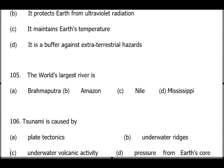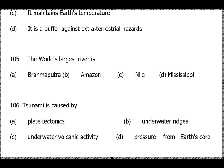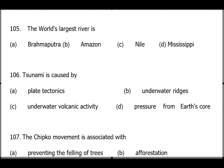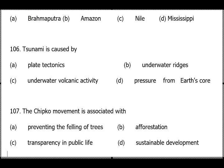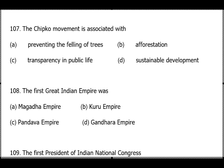Question 105: World's largest river — for Indian textbooks, the longest river is the Ganga (originating from Gangotri Glacier) and the largest by water volume is the Brahmaputra. Question 106: Tsunami is caused by underwater volcanic activity — option C. Question 107: The Chipko Movement is associated with preventing the felling of trees — option A. It started in the 1970s in the Garhwal mountains of Uttarakhand; a famous associated person is Sundarlal Bahuguna.